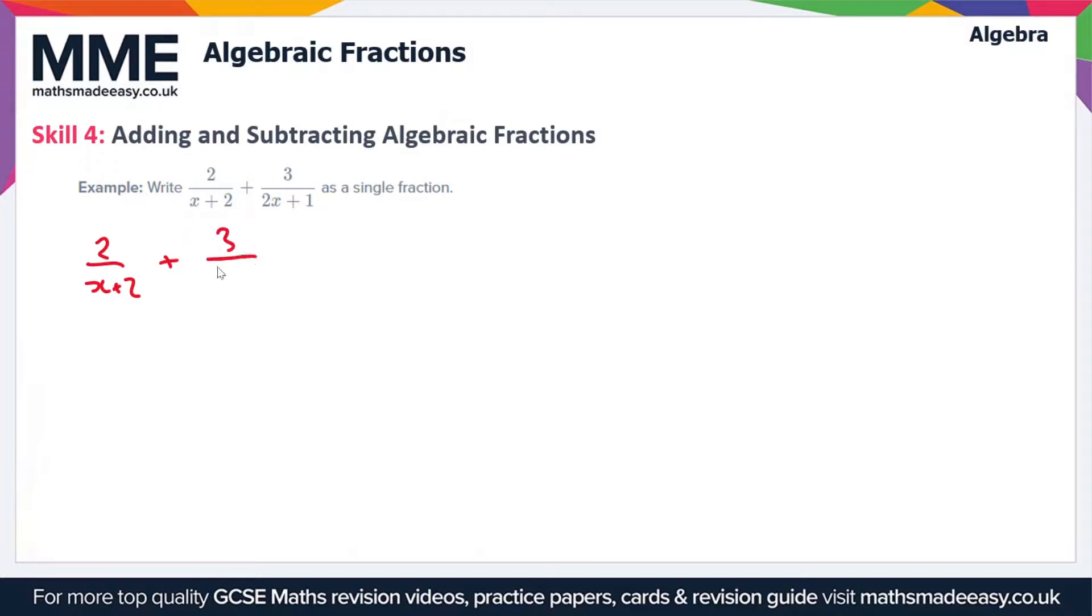plus 3 over 2x plus 1 as a single fraction. So the rule is we need to get a common denominator, and to get a common denominator we have to multiply each individual fraction by the denominator of the other fraction, so that's the top and the bottom.